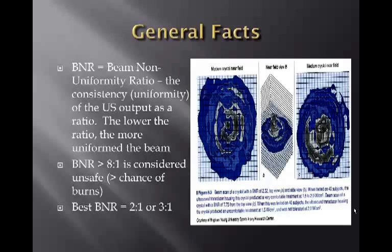BNR is the beam non-uniformity ratio. This is the consistency or uniformity of the ultrasound output as a ratio. The lower the ratio, the more uniform the beam. If the BNR is greater than an 8 to 1 ratio, it is considered unsafe and it's going to increase your chances of burns. The best BNR found on machines is a 2 to 1 or a 3 to 1, so the importance of this is decreasing the risk of burns.